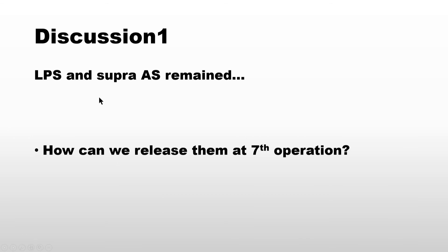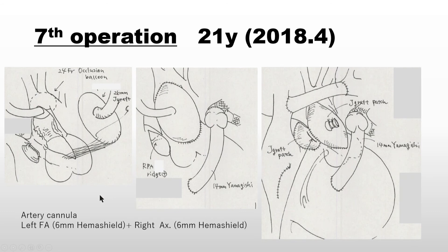Discussion points: left PA still stenotic, supraaortic stenosis present, and patient has ascending aorta kinking causing hemolytic phenomenon. How can we relieve this for the seventh time operation? My plan was to completely take out the left pulmonary arteries, put a big patch on the ascending aorta, make the sinus of Valsalva slightly smaller near the aortic valve, and put a graft directly to the left pulmonary arteries — a artificial graft combined with a tri-leaflet valve.